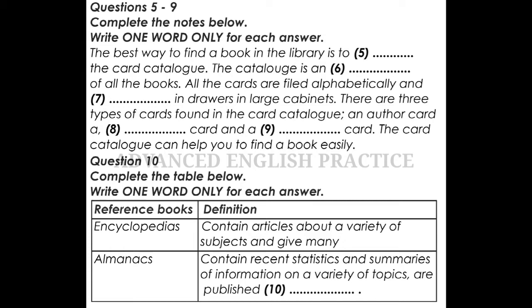Second is encyclopaedias. Encyclopaedias are reference books that provide factual information about people, events, places and subjects of lasting interest. Each article is written by a specialist on the topic being discussed. An encyclopaedia usually consists of a number of books arranged in a set. The volumes are arranged in alphabetical order according to the topic of each article. Letters are stamped on the spine of each volume to indicate the alphabetical range of the topics in each volume.